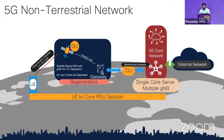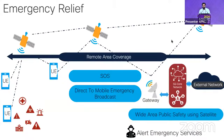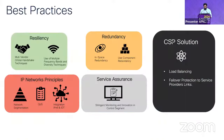Other use cases include emergency relief — both individual emergencies and broadcast emergencies like earthquake events. Using direct satellite connectivity for user equipment, we can provide wide-area public safety communications. These two types of emergencies can both be served by this technology.